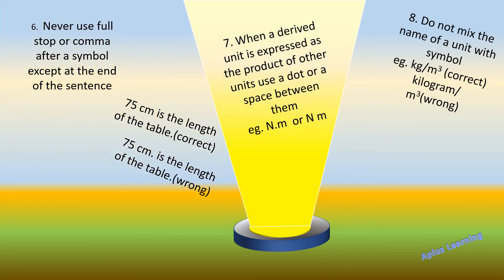The next rule: when a derived unit is expressed as a product of other units, use a dot or a space between them. For example, newton meter — between the two unit symbols there should be either a dot or a space.